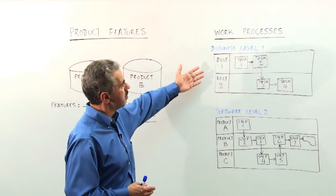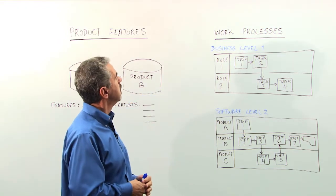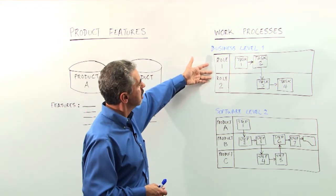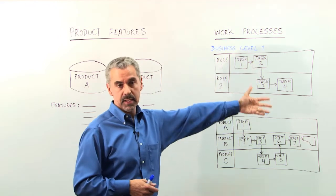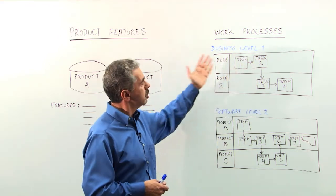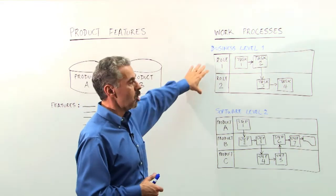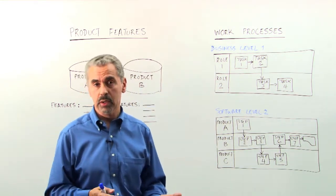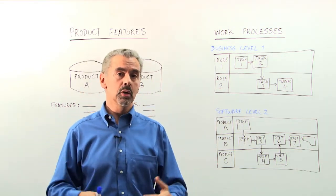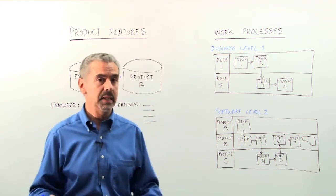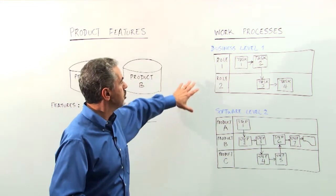We can look at the business level, or what we call level one, and here we have roles accomplishing tasks in order to create deliverables. Now this is the work process that you're already familiar with. You already know how to do electrical engineering or piping design. Nothing new there.